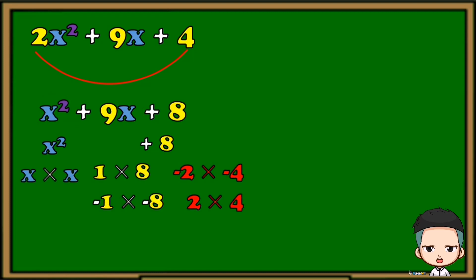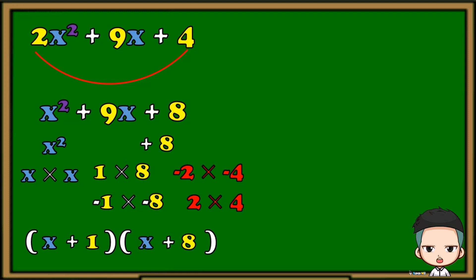Let's copy the first term and the last term, then write all the factors. For x squared, we have x times x. And for positive 8, we have 1 times 8, negative 1 times negative 8, negative 2 times negative 4, and 2 times 4. Next, we need to find the factors that if we add, the result is positive 9. If we add 1 and 8, the result is positive 9 — those are the factors we are looking for. So for the factors of 8, we're going to use 1 and 8. Prepare the parentheses, copy the factors of x squared and the factors 1 and 8. Their sign will be the operation.